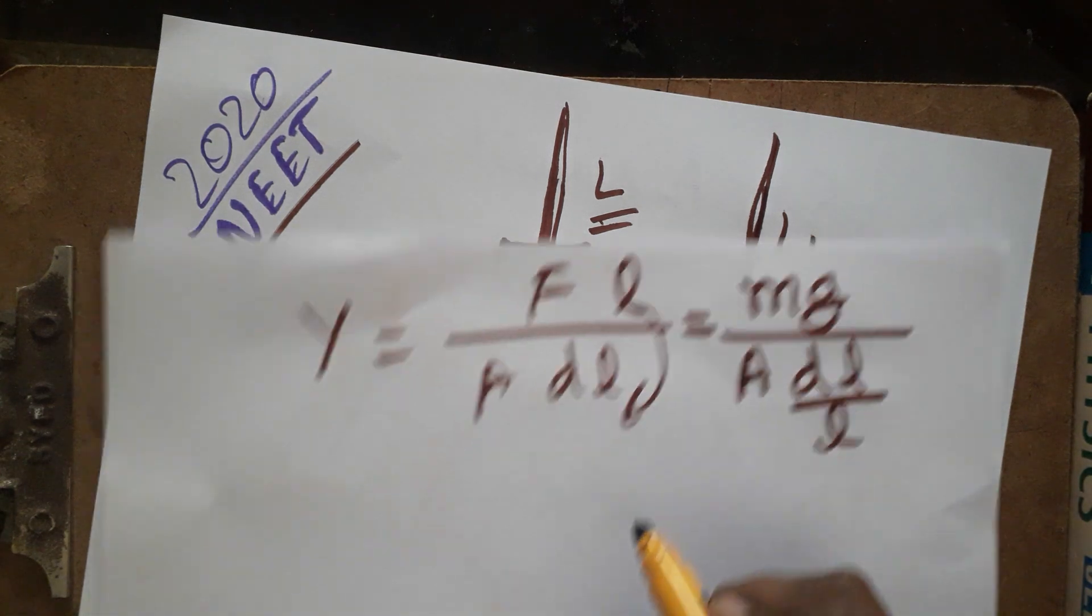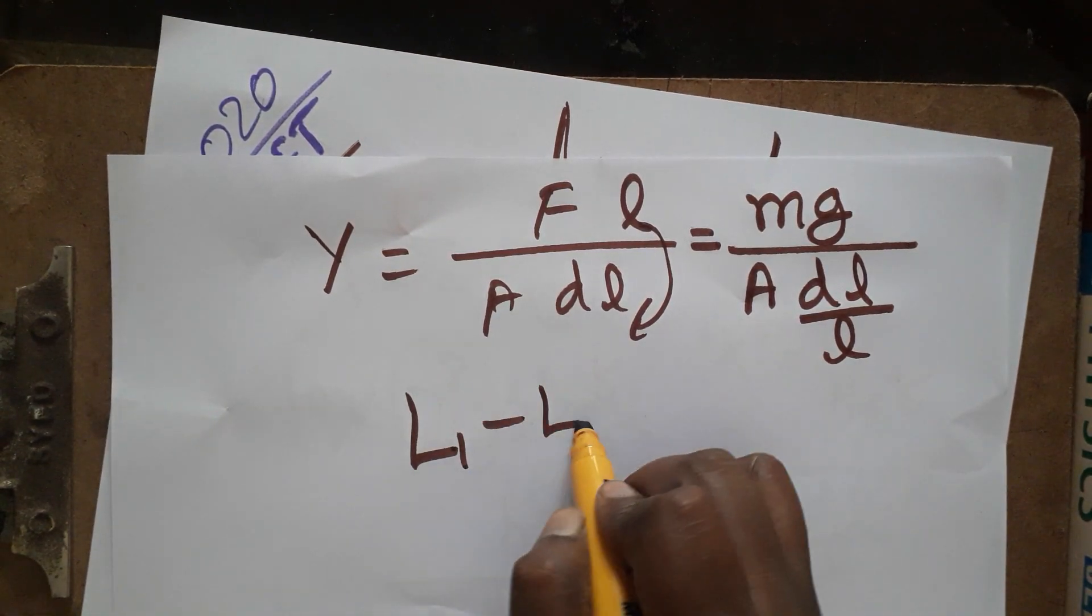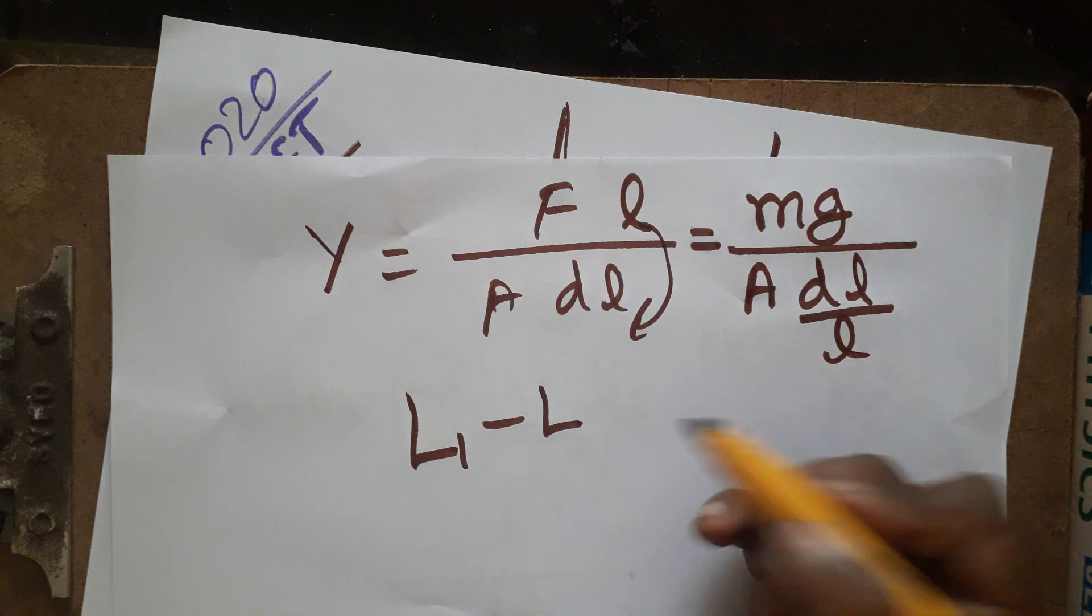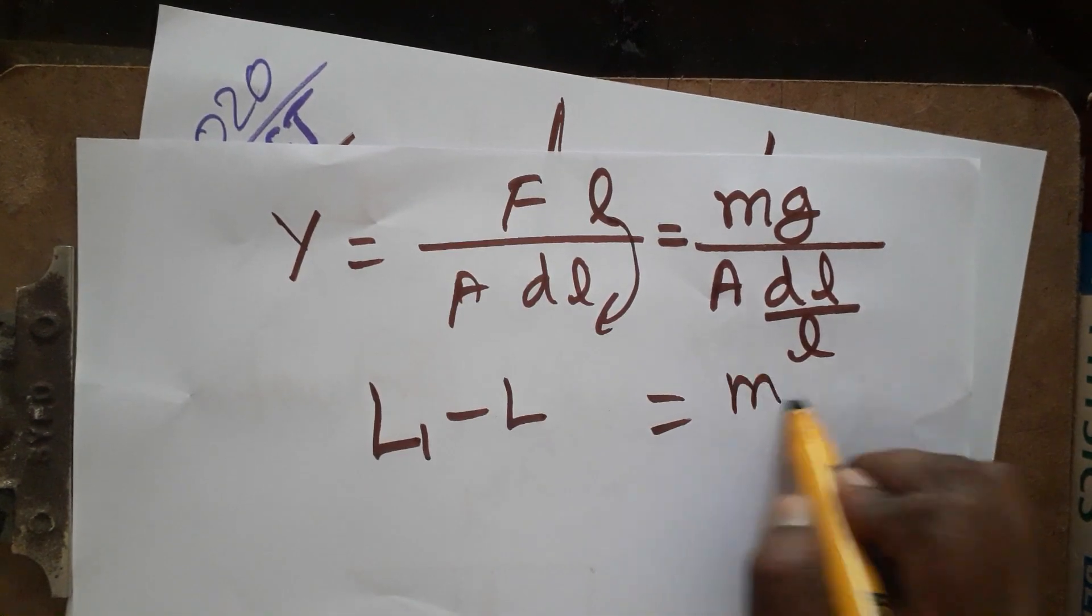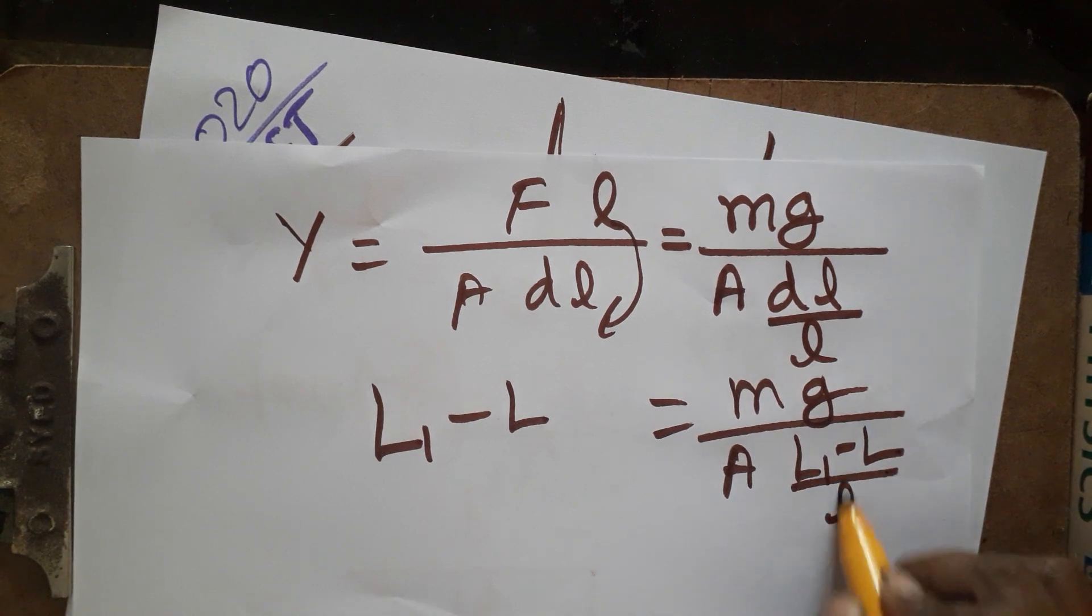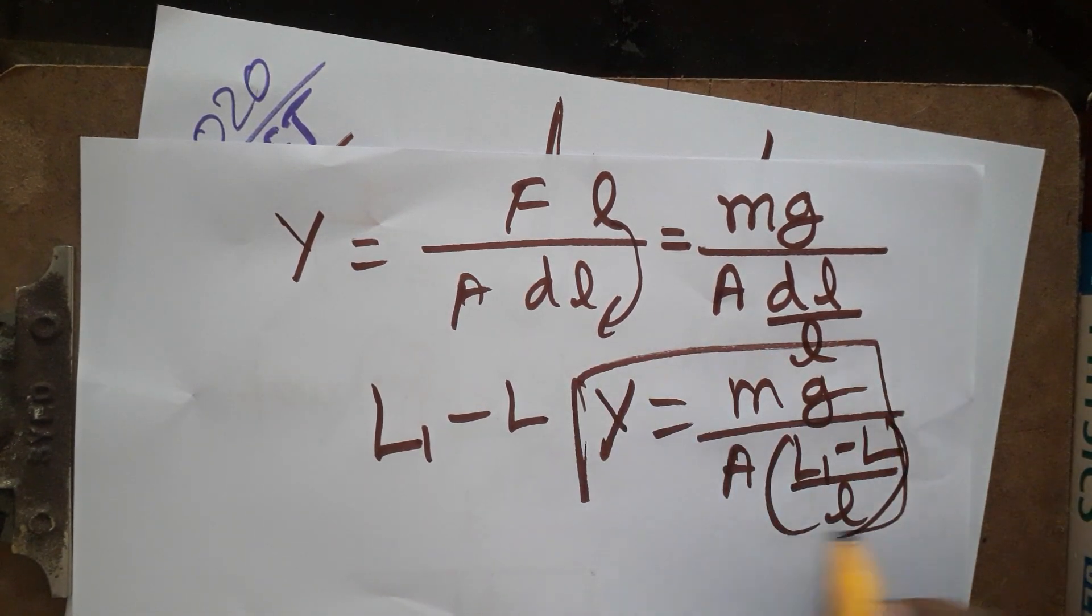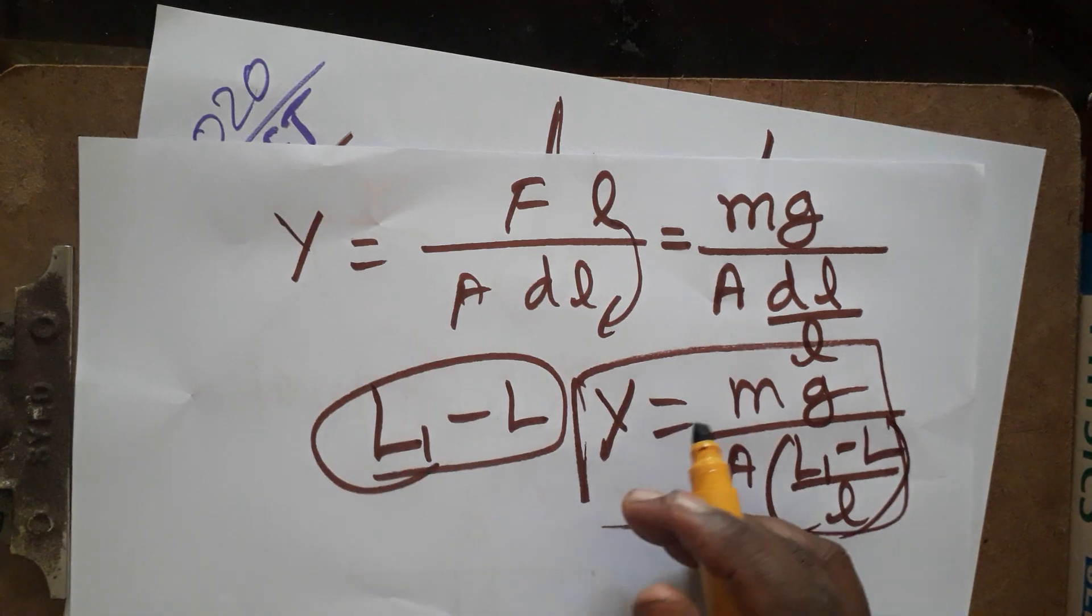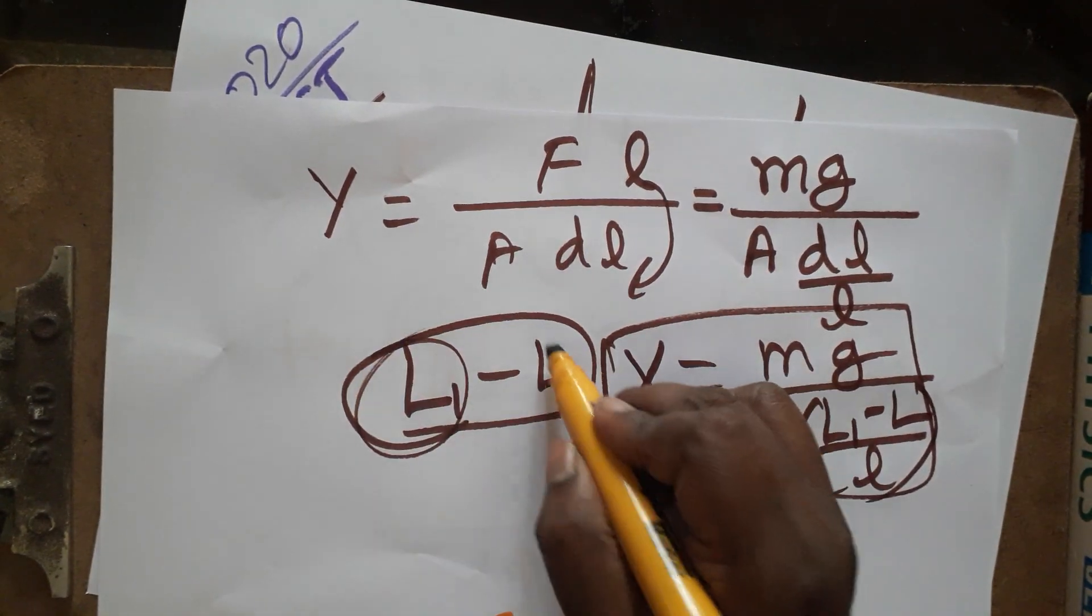How to find dL by L? Final length minus initial length. If you know this, you can easily come to know the answer: mg divided by A times (L1 minus L) divided by L. This is the final answer for modulus of elasticity.